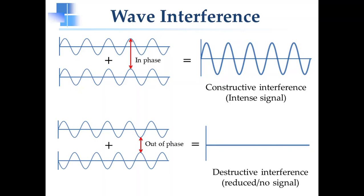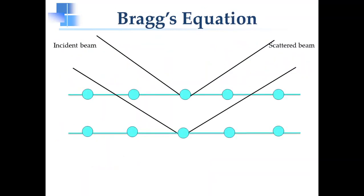In order for constructive interference to occur, the scattered waves must be in phase. Constructive interference can only occur if the incident and scattered waves travel equal distance.